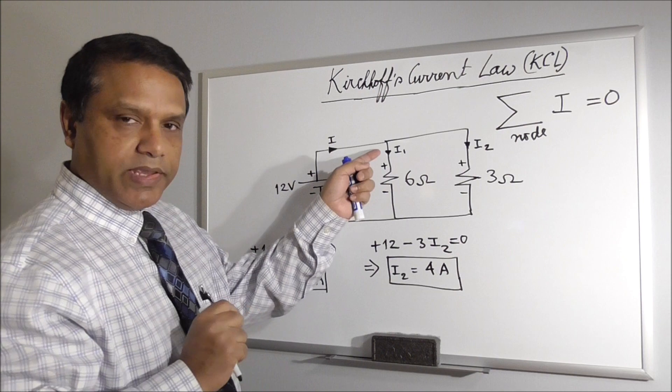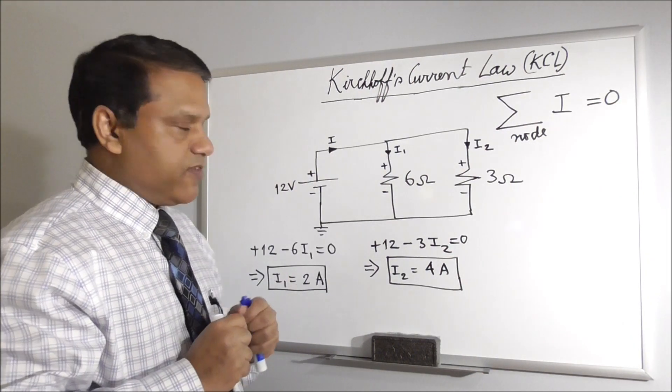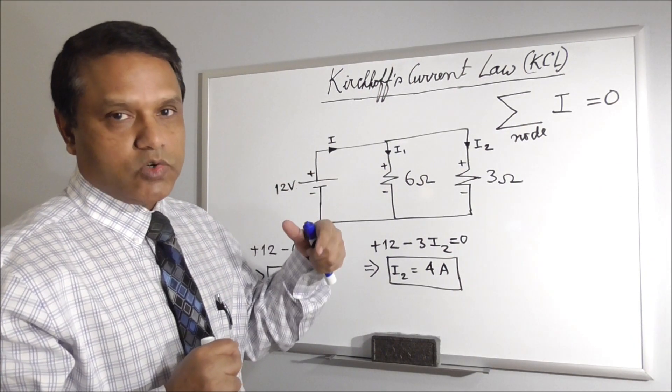So let's first write this one. This is an incoming current. You have to be consistent. If you assume incoming as positive, then you have to assume outgoing as negative.